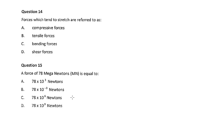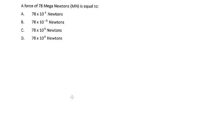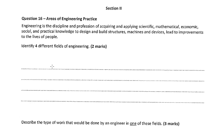A mega newton is equal to something times ten to the six newtons. Mega means ten to the six, or million. Question 16, areas of engineering practice. Engineering is a discipline acquiring scientific, mathematical, economic, social, practical knowledge in order to design structures, machines, devices to lead improvements to the lives of people. Identify four different fields of engineering. I can see mechanical, civil, ITEE - information, technology and electronics engineers. I don't actually have ITE, what it stands for. I would have electrical, biomedical, environmental and chemical. They're the major colleges recognized by Engineers Australia.